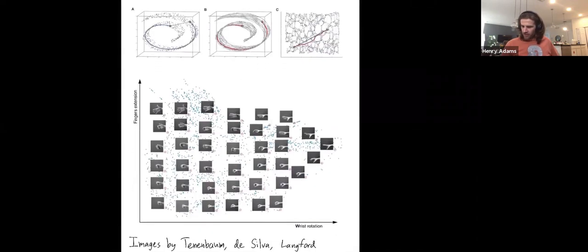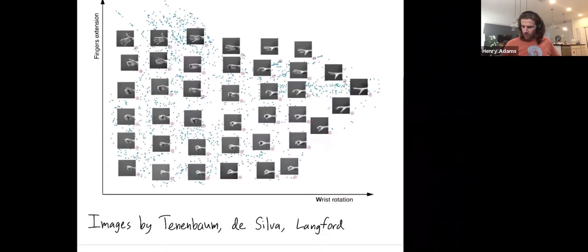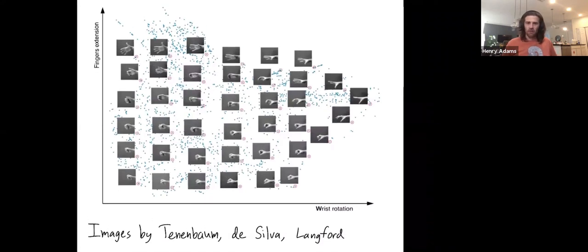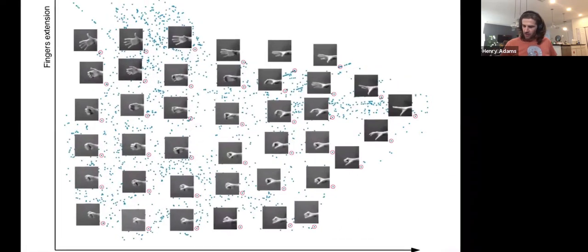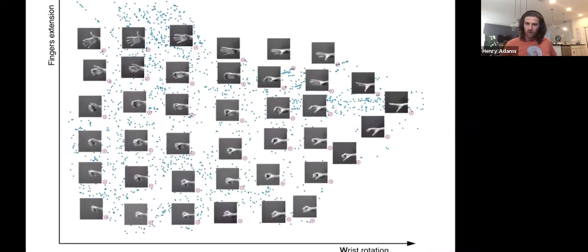One other fun example, and this is from the ISOMAP paper by Tenenbaum, De Silva, and Winkford, is of images of hands. So many photographs were taken of somebody's hand. So I think the wrist was held in place, or maybe the elbow, the forearm. But then you could move your hands, and you could rotate at your wrist and move around your fingers. The person didn't do everything, so they didn't cross their fingers or things like that.